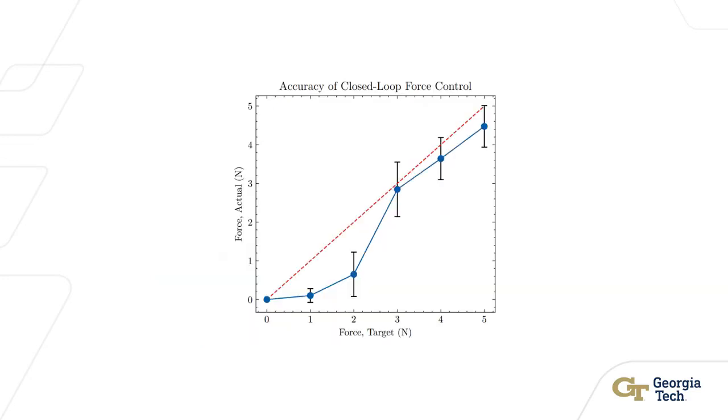We also demonstrate that VPACnet can be used to control a robot to regulate force. The robot uses a feedback loop to control its position until a target force is achieved, as shown on the x-axis. The actual force achieved is shown on the y-axis. We find that VPACnet may be inaccurate at low forces, but is more accurate at higher forces.